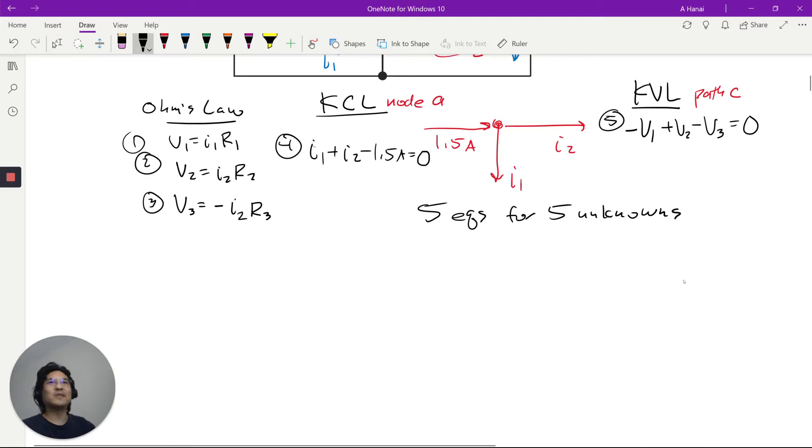It looks like each of these have two unknowns, this one has two unknowns, this one has three unknowns. Since that has the most, I'm going to substitute things into that one. So I'm going to substitute 1, 2, and 3 into 5.